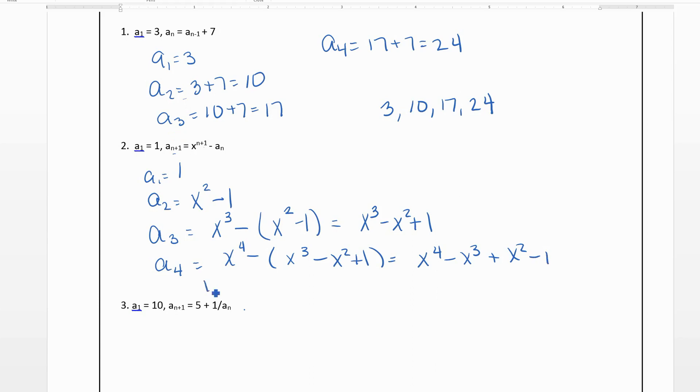So here we get x⁴ minus x³ plus x² minus 1. So our first four terms here would be 1, x² minus 1, x³ minus x² plus 1, and x⁴ minus x³ plus x² minus 1. So the terms don't have to be numbers. They could be expressions.